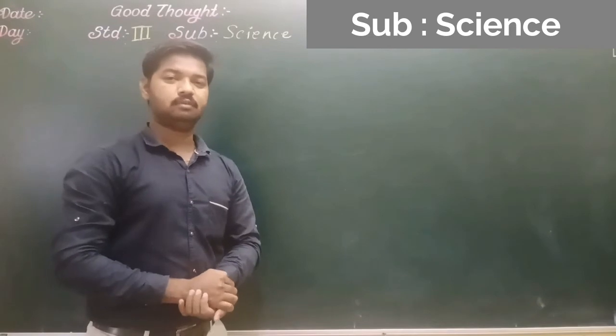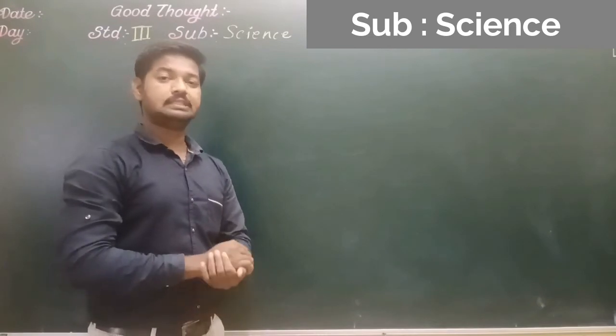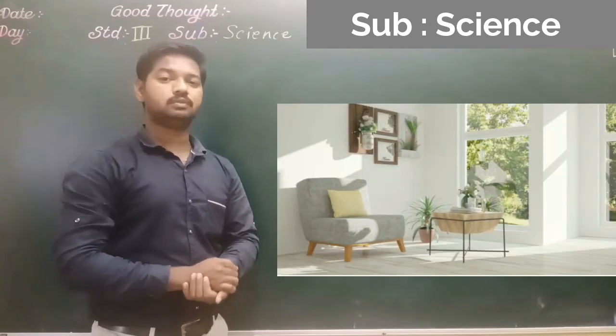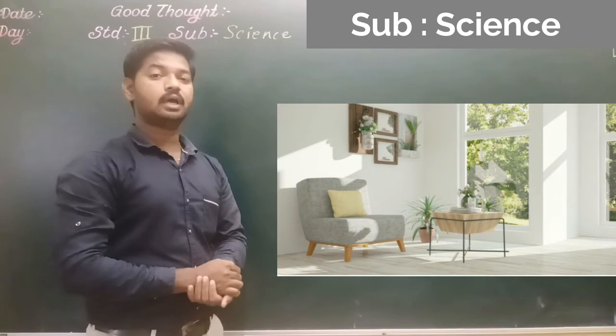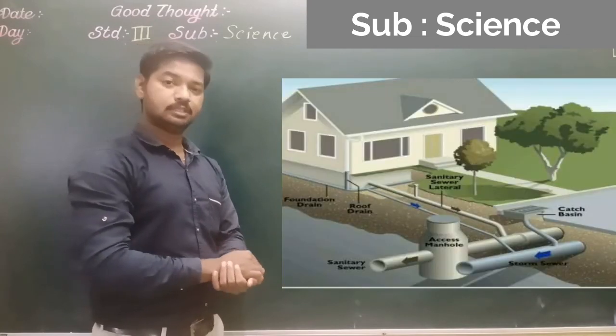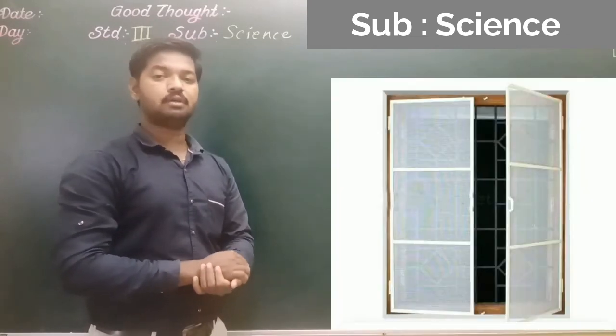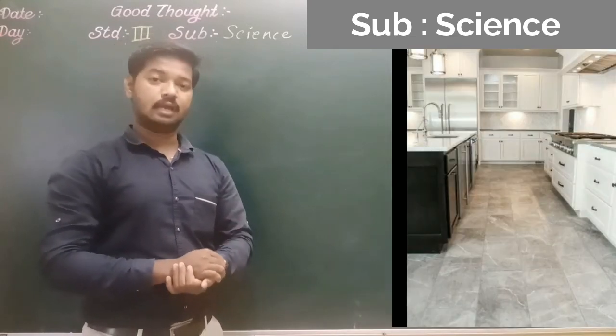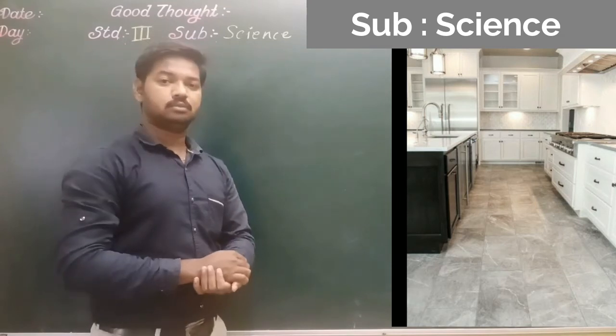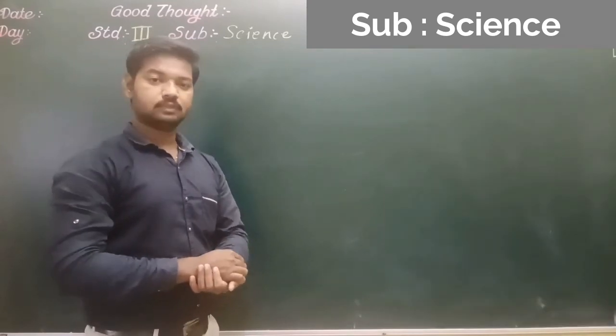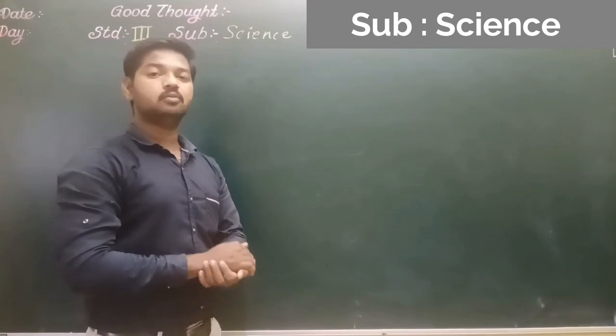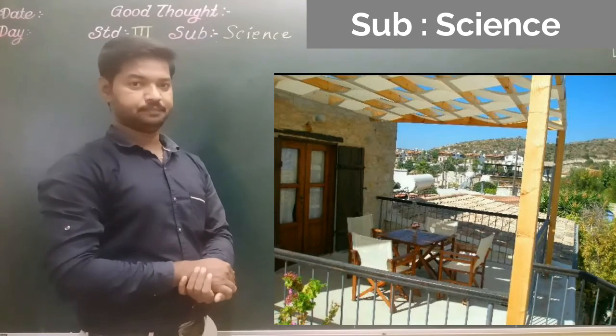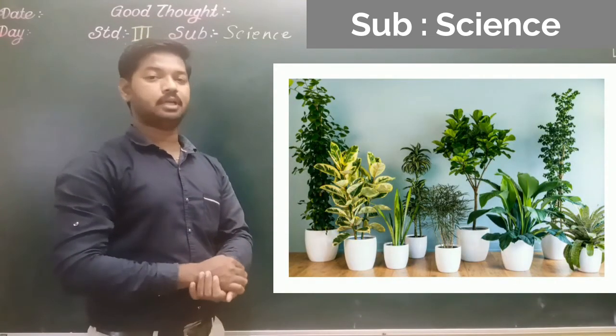So what we have learned today, we have learned about the features of a good house. In that we have seen the house should be well ventilated. It should have a proper drainage system. The windows and doors should have proper wire netting. Also we have seen the floor of the kitchen and bathroom should be sloped. It should have an open space like a veranda, courtyard or balcony, and it should have many plants.